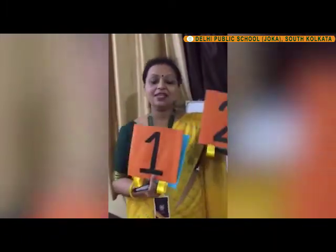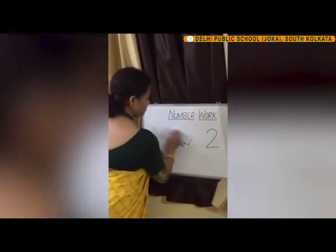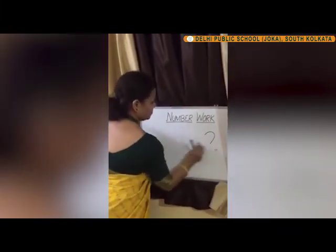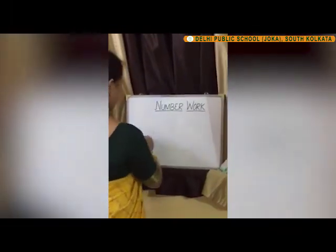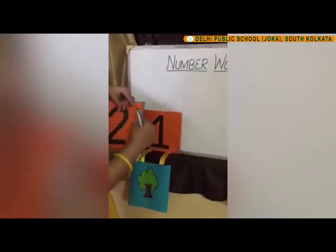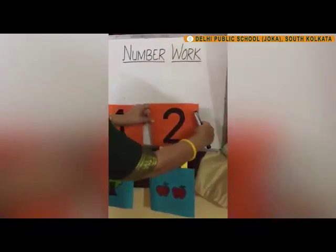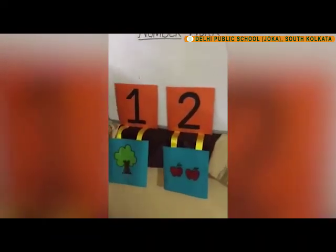So we have learned number one and number two. Number one, one tree. Number two, and there are two apples.